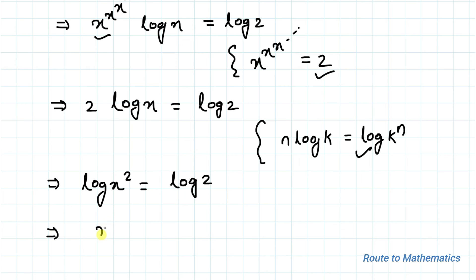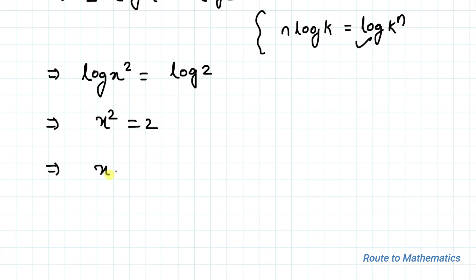This implies x equals to plus or minus root 2. From here we can write x is equals to root 2 or x is equals to minus root 2. As negative value of logarithm is not defined, the value of x must be equals to root 2. This is our answer.